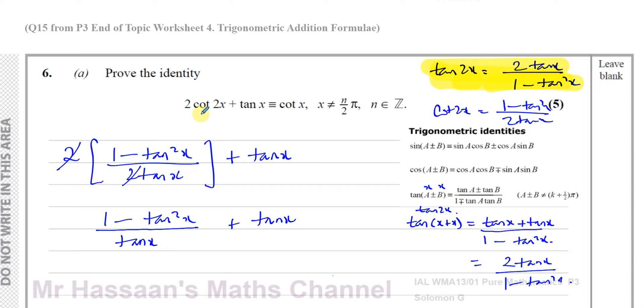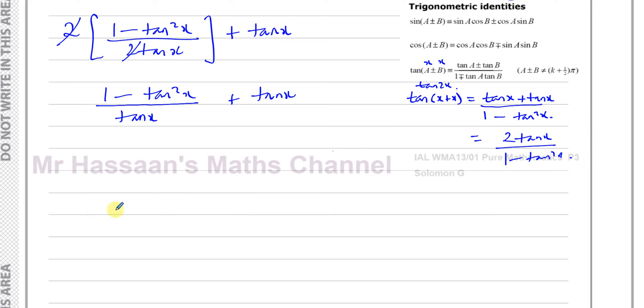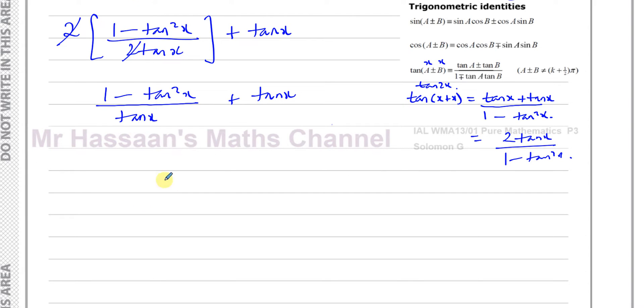So the 2 cancels with this 2. So you're left with 1 minus the tan squared of x divided by tan x plus tan x. Now I've got two terms becoming one term. So I'm going to add these two fractions together. If I add these two fractions together, I'll make the denominators the same. So I'll make them both expressed as something under tan x. So this is going to stay as it is. 1 minus tan squared x plus, and this will be, if I make this tan x, I have to multiply the numerator by tan x, I get tan squared x.